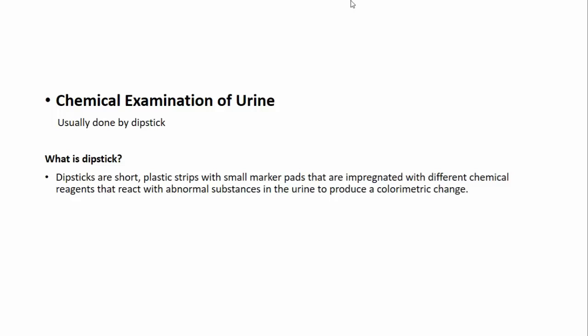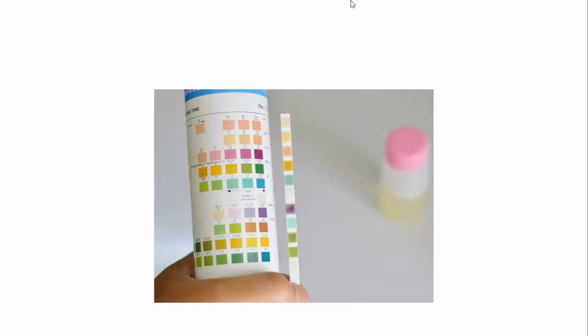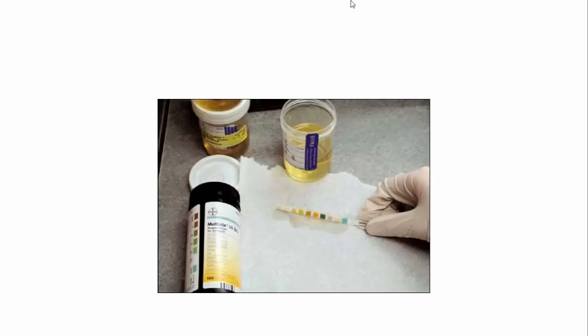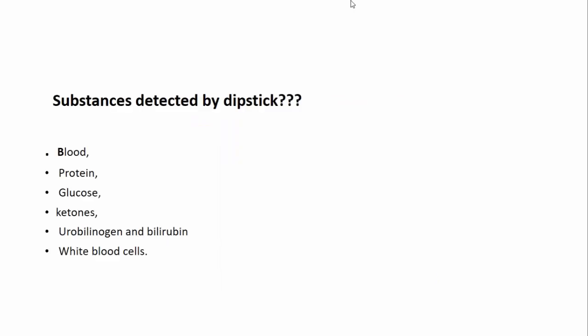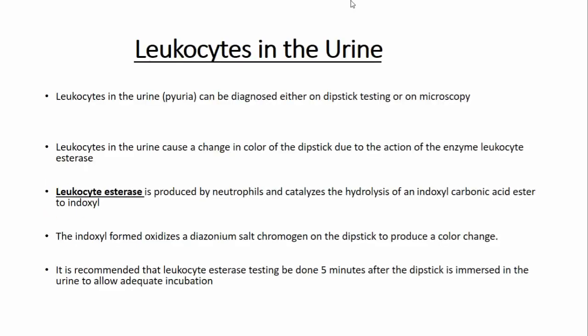Chemical examination of urine is done by a dipstick test. Dipsticks are short plastic strips with impregnated chemicals that react with certain chemicals in the urine to produce color changes. You dip the stick in the urine, then twist it to one side so excess urine trickles off, making sure urine doesn't mix between the chemicals to avoid false results. Substances detected — which are not normally present in urine — include blood, protein, glucose, ketones, urobilinogen, and white blood cells.